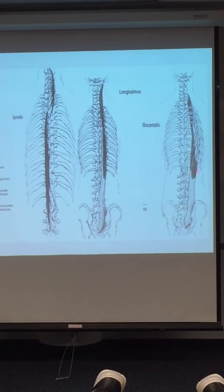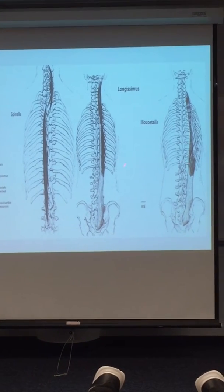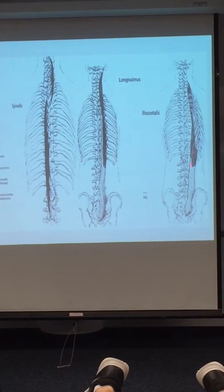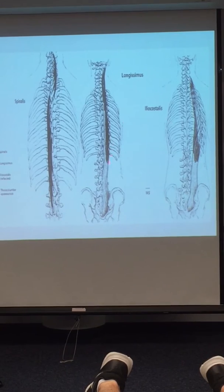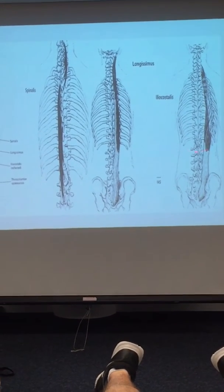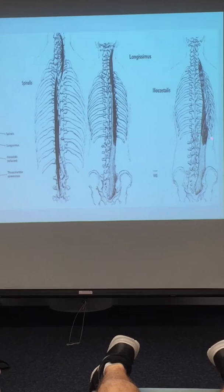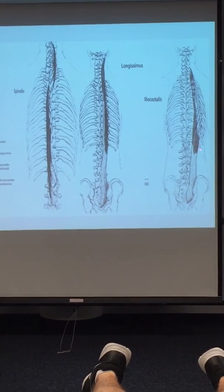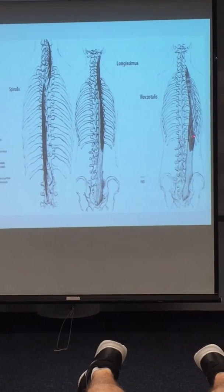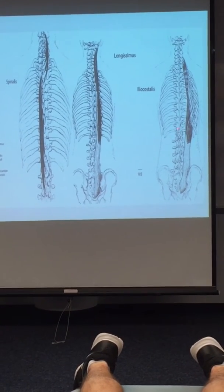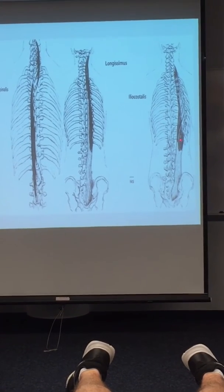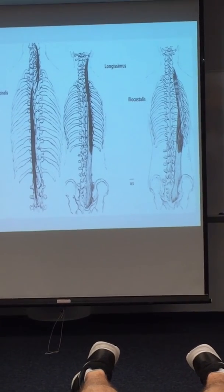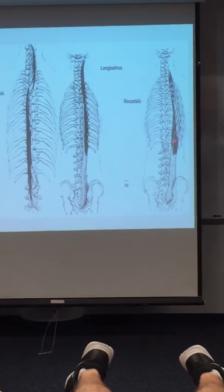The muscles get thicker and broader the further down you go. That's why when we were doing our rib 12 palpation, it is very difficult between the broadness of the iliocostalis and the longissimus and even the spinalis to follow that rib all the way into number 12 — you're going to lose it. Coming up this way you'll eventually lose it, and coming straight across you'll be somewhere between 11 and 12. If you could really stay on that rib, the direction would change and lead you right into T12, but that's going to be very difficult to do in that region.